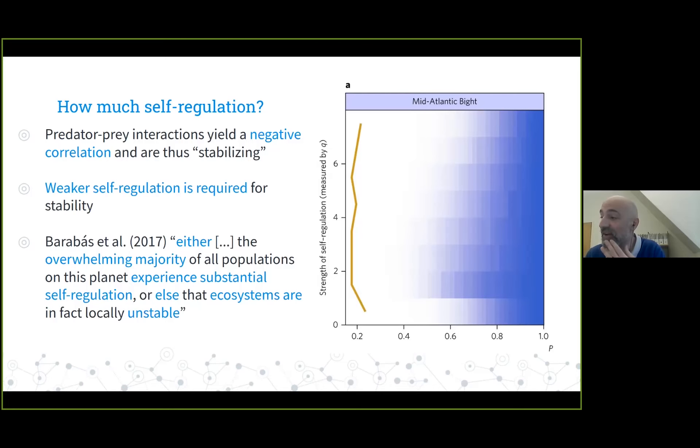We need less self-regulation, but how much self-regulation do we need in the first place? This is something we studied recently with Gyuri Barabás and others. Here's a graph showing the proportion of species self-regulating on the x-axis and the strength of self-regulation on the y-axis. All I want you to take from this graph is that to have stability, you need a large fraction of species self-regulating. Even though you have predator-prey interactions, many, many species need to self-regulate. This is not really something we observe clearly in the field. Barabás et al concluded that either the overwhelming majority of all populations on this planet experience substantial self-regulation, or else ecosystems are in fact unstable.